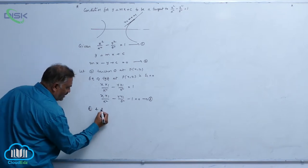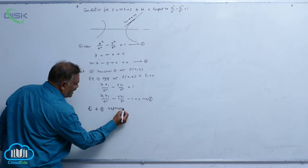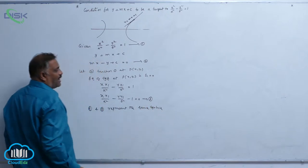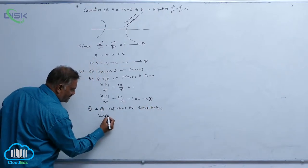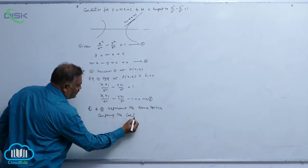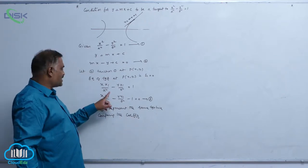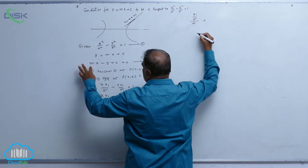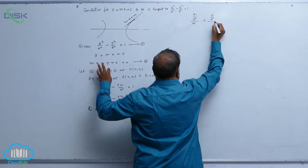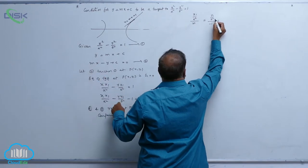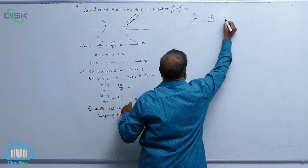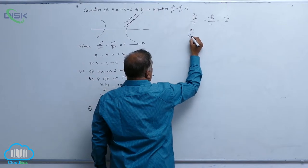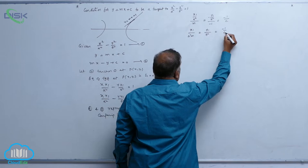Now equations 2 and 3 represent the same tangent line. By comparing the coefficients, the x coefficient in equation 3 is x₁/a², while in equation 2 it is m. So x₁/a² divided by m equals y₁/b² divided by -1, which equals -1 divided by c. Therefore x₁/a²·m = y₁/b²·(-1) = -1/c.